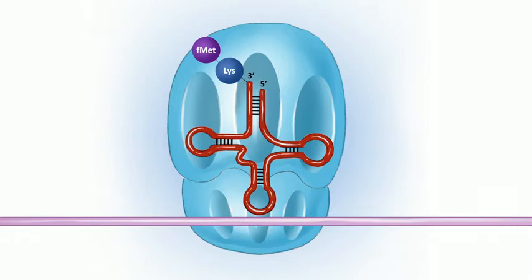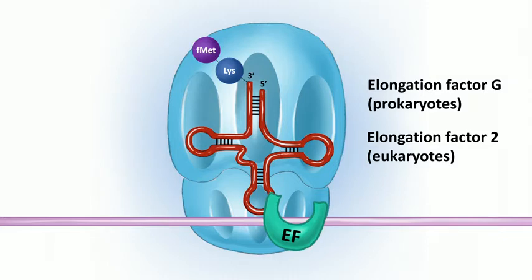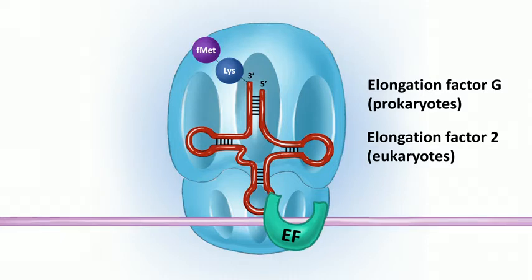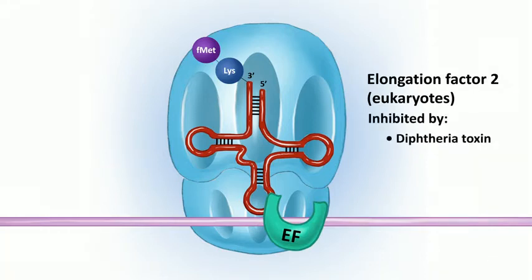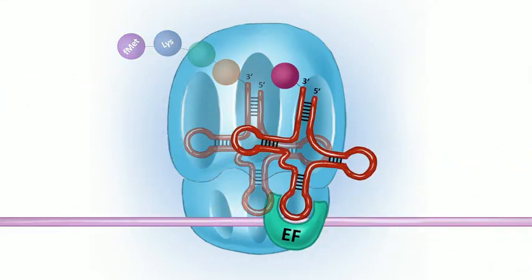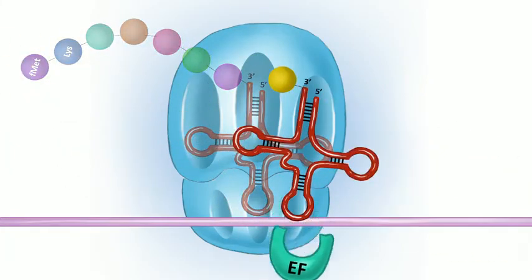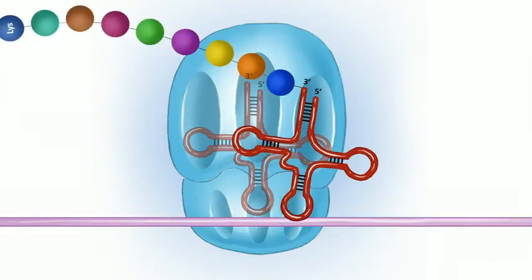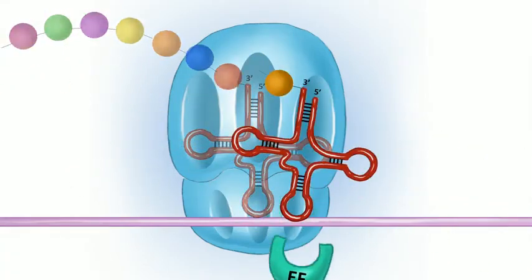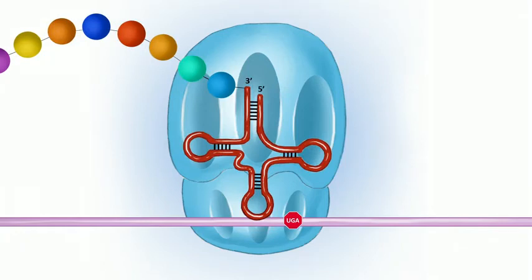Translocation requires elongation factor G (EF-G) in prokaryotes and elongation factor 2 (EF-2) in eukaryotes — make sure you know those. This is clinically important because diphtheria toxin and exotoxin A from Pseudomonas both work by inhibiting EF-2 in host cells. Elongation keeps going as long as there's mRNA code to translate: new aminoacyl-tRNA comes in at the A site, the 23S rRNA peptidyl transferase moves the polypeptide chain to the A site, and the whole complex slides over one codon and repeats.